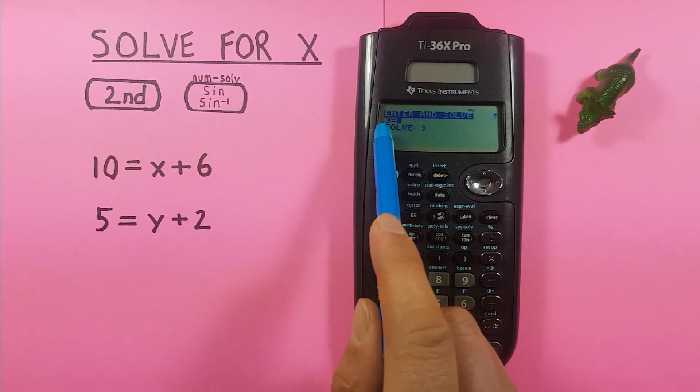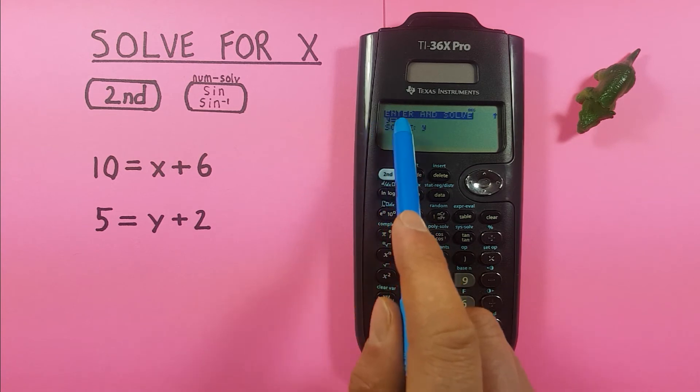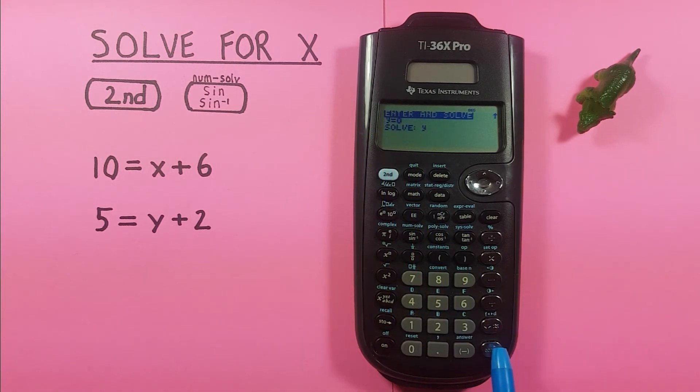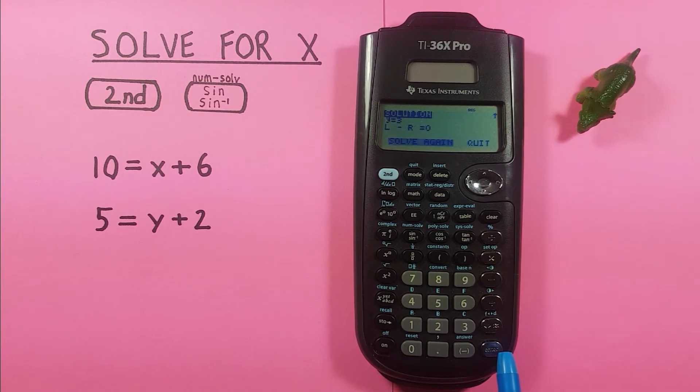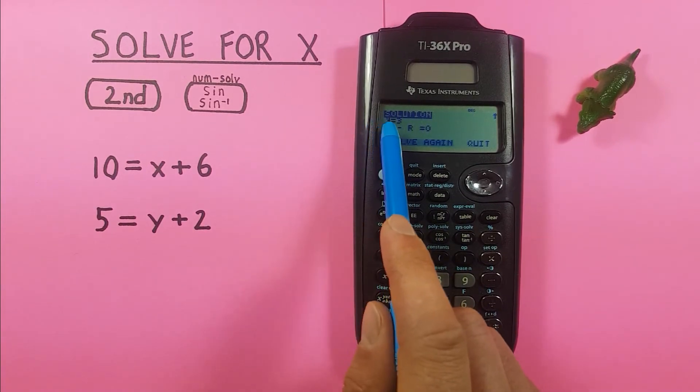There we go. Now we get y equals 0. That's because we currently have nothing saved in y solving for y. So we say enter twice. And we get a result of y equals 3.